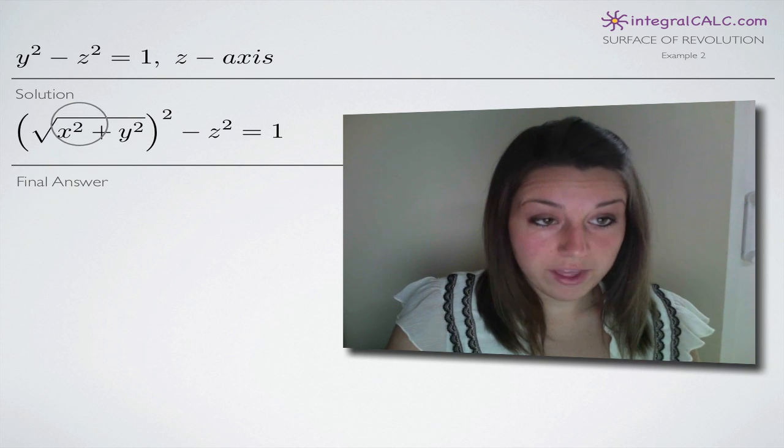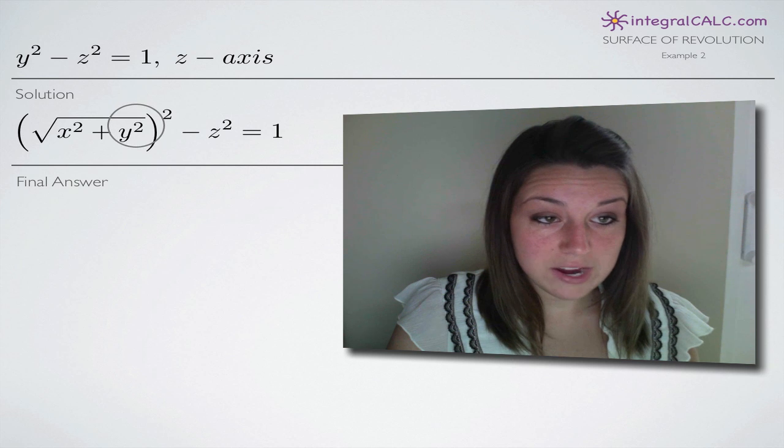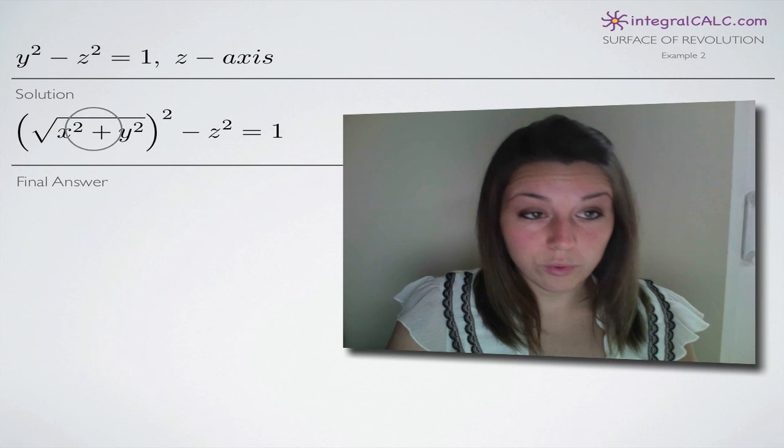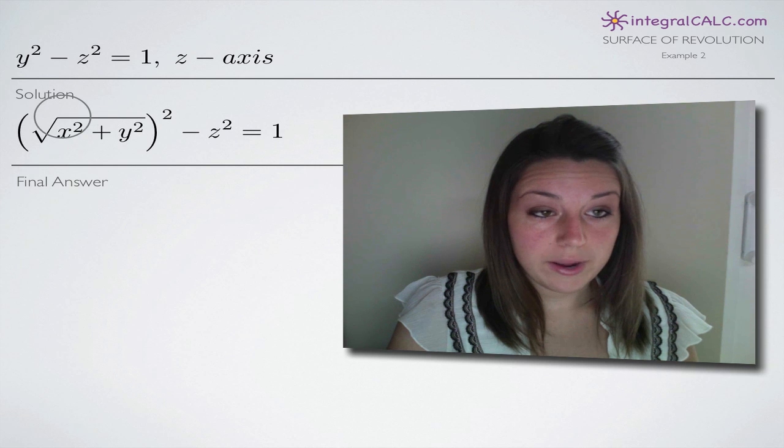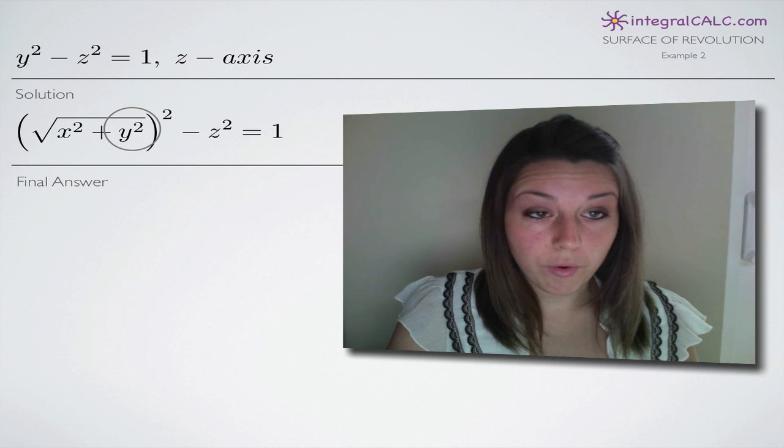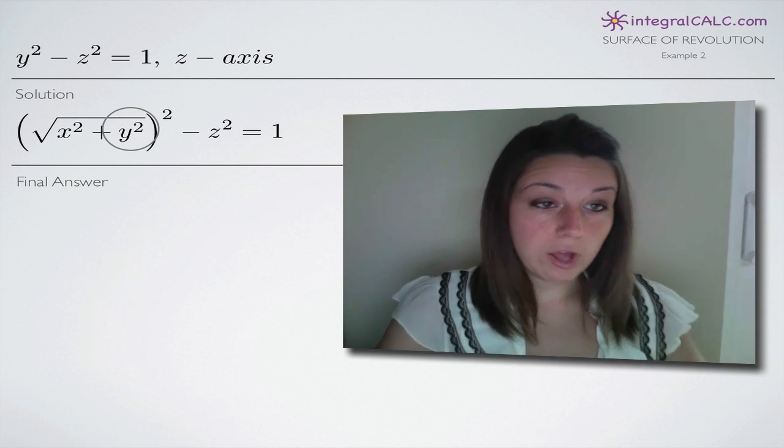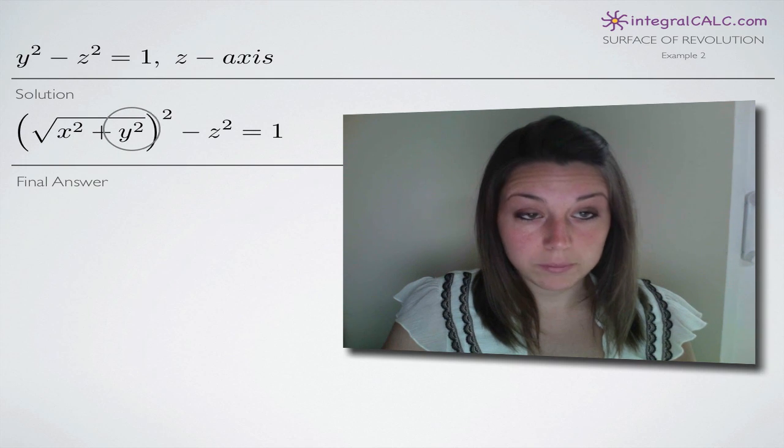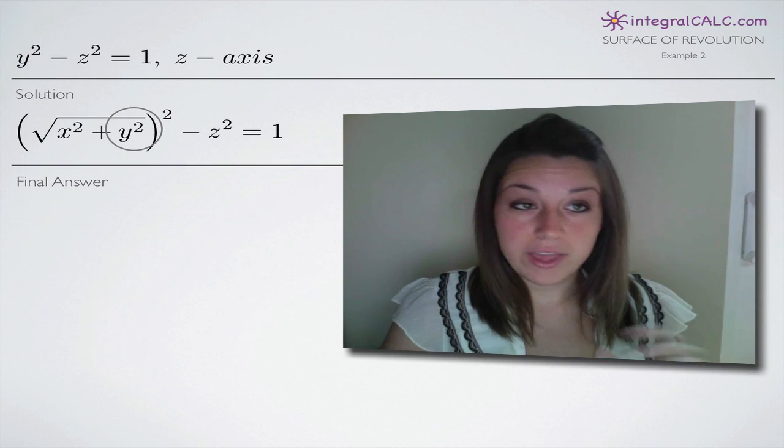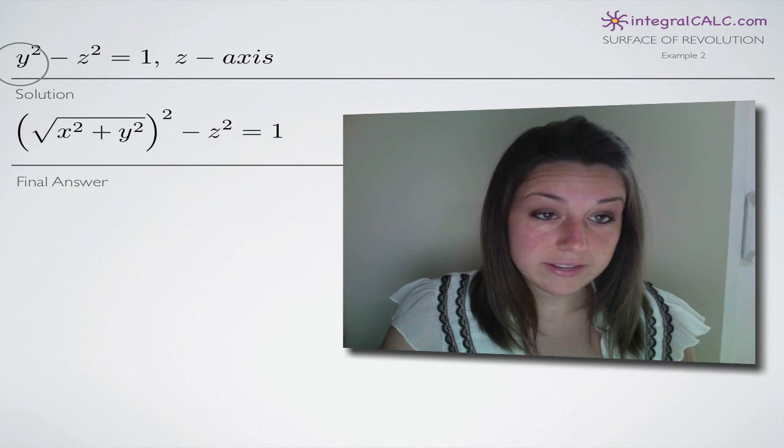You square both of them, so add in these squared exponents here. And then you take the square root of that sum. So you write in your square root sign here over both of those. And that whole block here, this quantity square root of the quantity x squared plus y squared, that whole thing is what you end up replacing y with.